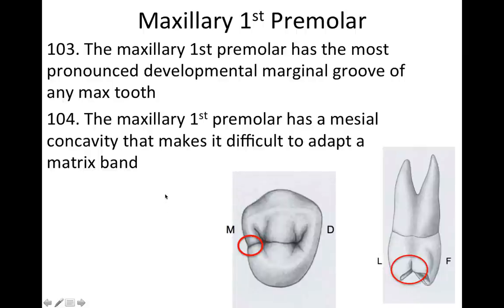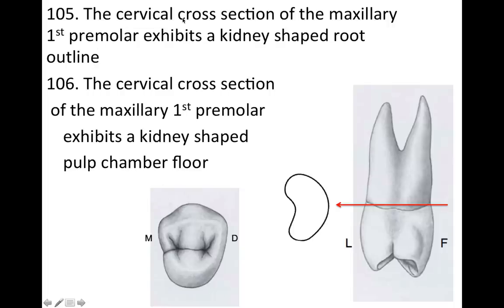The cervical cross section of the maxillary first premolar exhibits a kidney-shaped root outline, kind of like a kidney bean. This line represents what it would look like in cross section — a kidney bean shape — because of the mesial concavity. Similarly, it also exhibits a kidney-shaped pulp chamber floor.